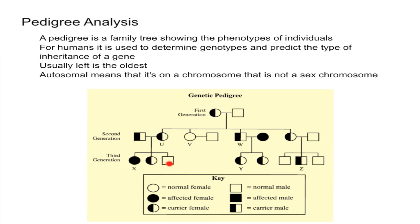The one on the right is the youngest. One thing to remember is you're not always going to get a nice picture like this where they tell you carriers and give you the exact phenotype — sometimes you're going to have to figure it out. Most likely you'll use the pedigree to determine whether a trait is autosomal dominant or recessive, or sex-linked dominant or recessive.